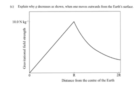So this one's a relatively easy question compared to the other ones. You have to explain why G decreases in this way as you move outwards from the Earth's surface.